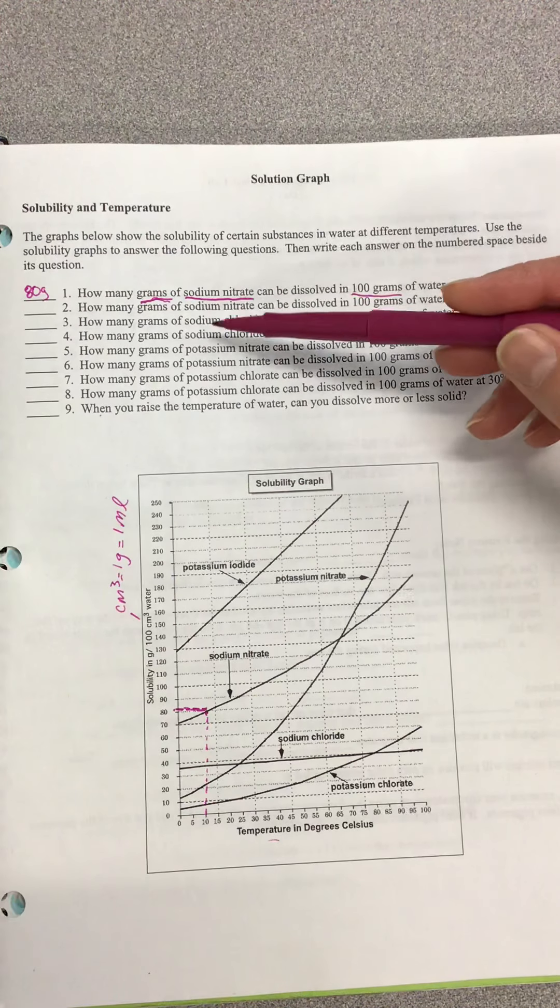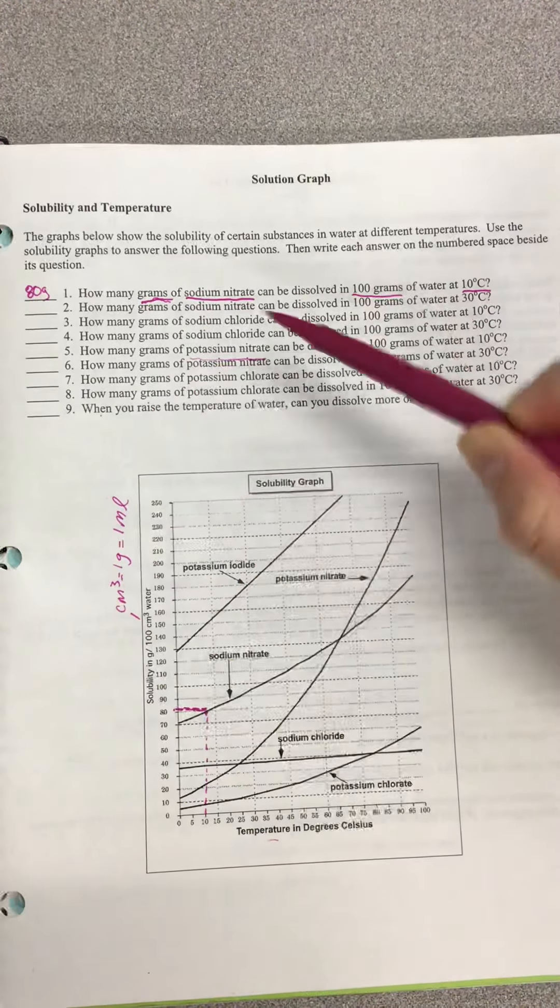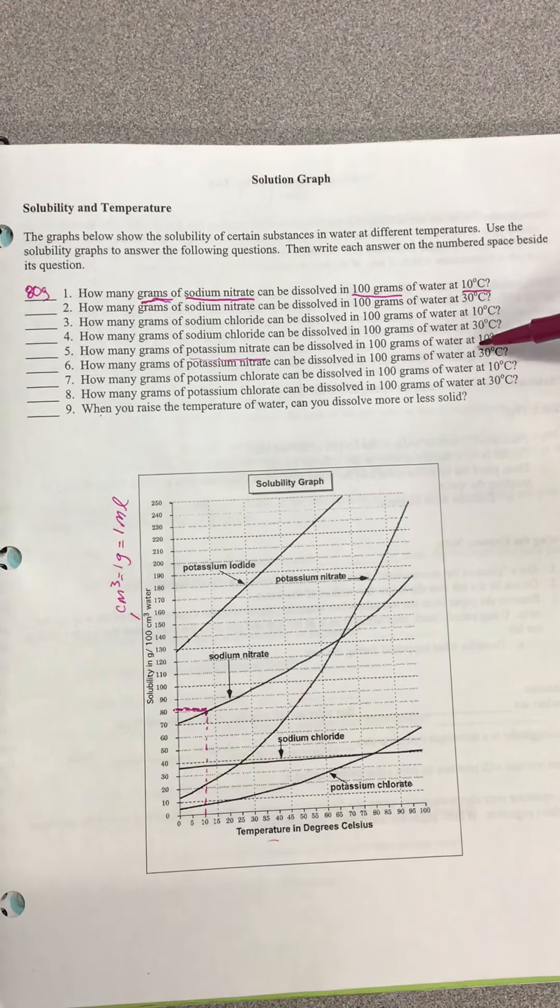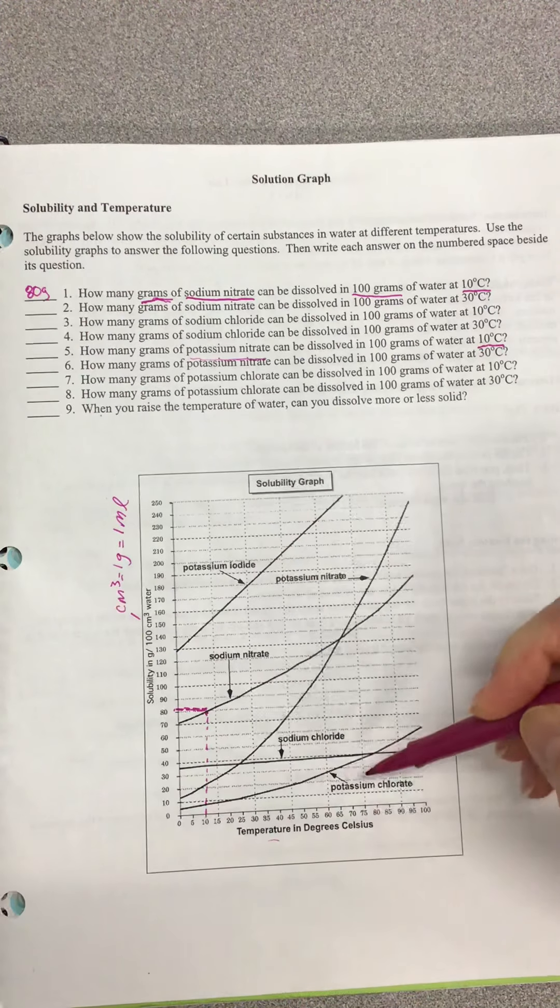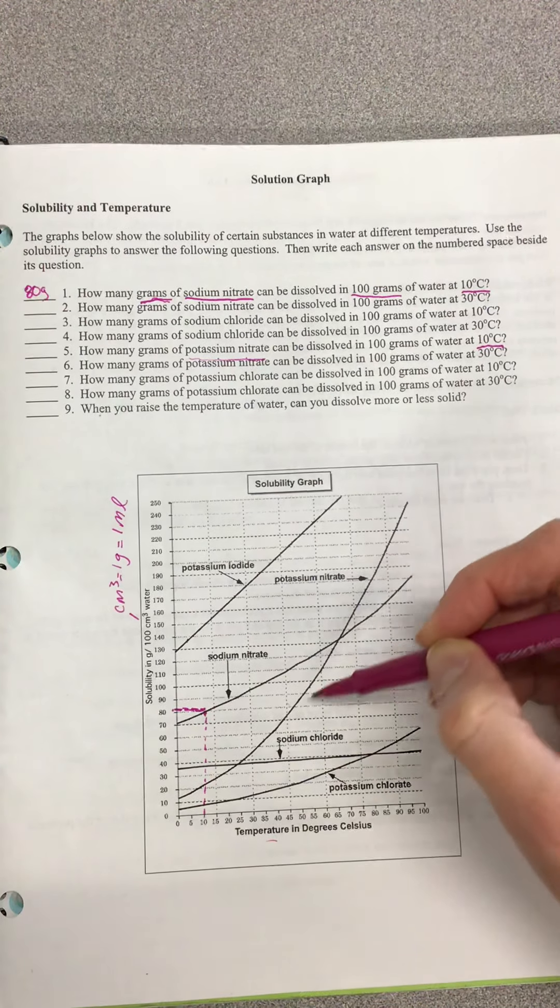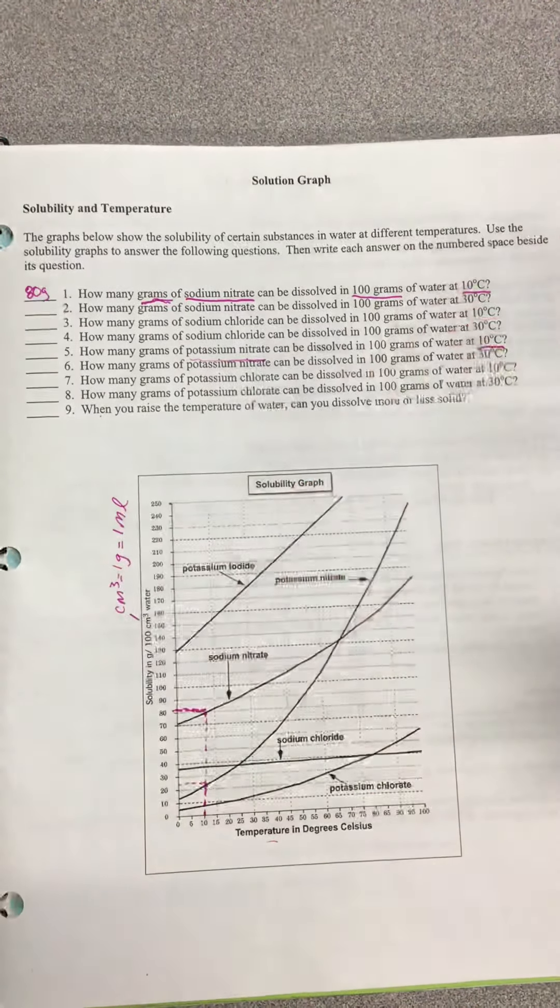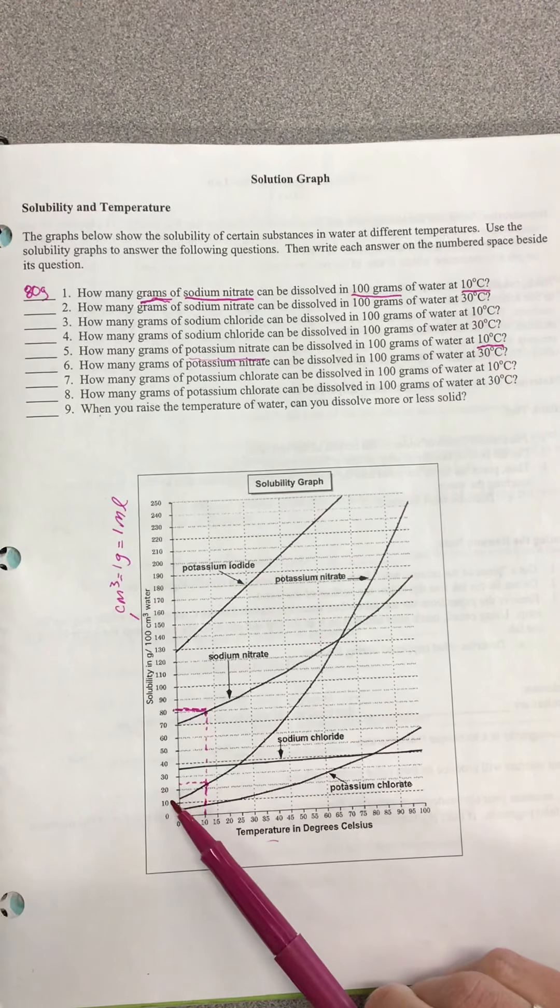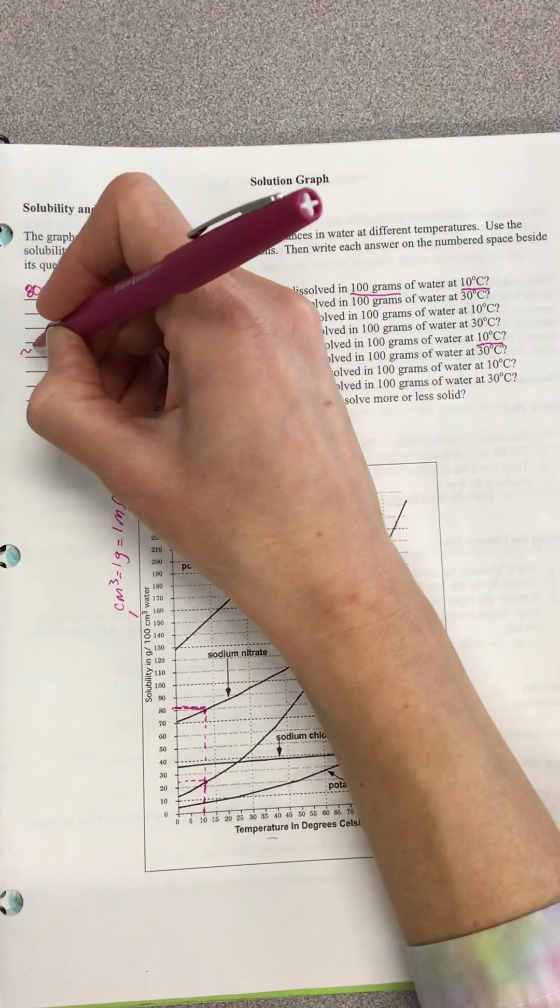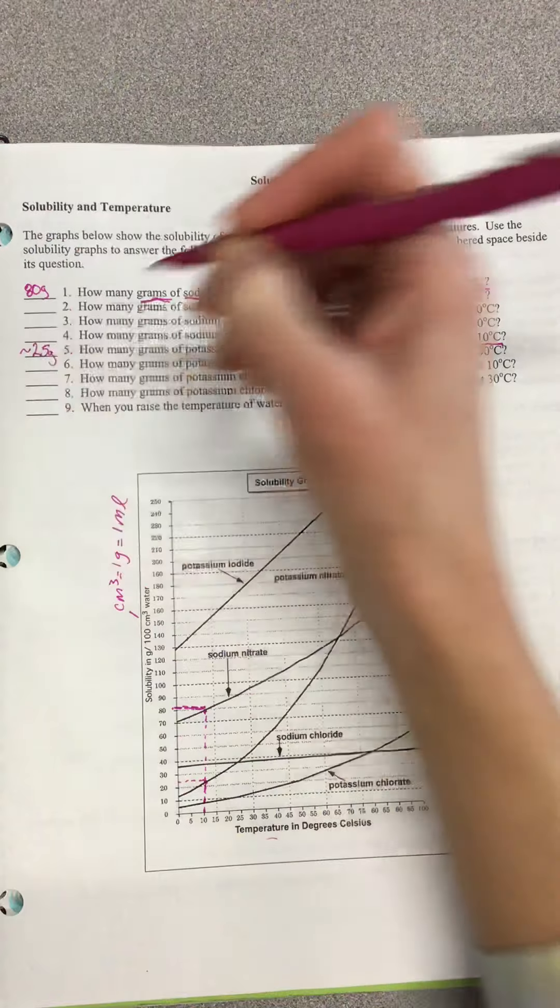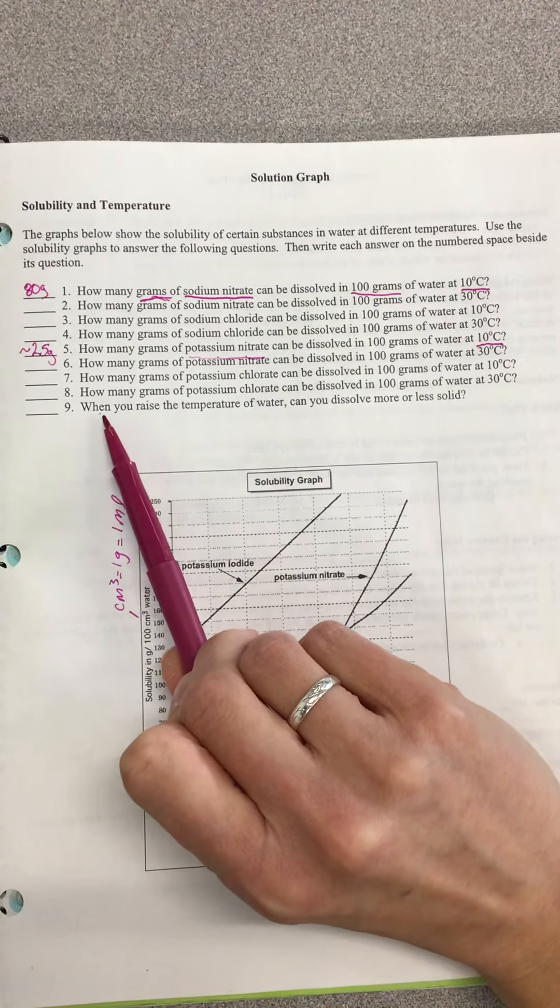Let's do one that's not sodium nitrate. Let's see, how about potassium nitrate, number five? How many grams of potassium nitrate can be dissolved in 100 grams of water at 10 degrees Celsius? So I'm going to go 10 degrees Celsius, and my potassium nitrate line is right here. Here's 10 degrees Celsius, there's my potassium nitrate line. Then I will go over—I'm going to ballpark that at about 25 grams. So number five, you can write about 25 grams.